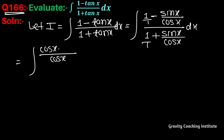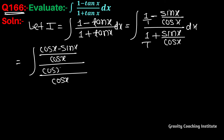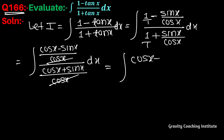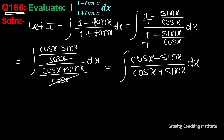Taking LCM, we get (cos x - sin x) over cos x in the numerator, and (cos x + sin x) over cos x in the denominator. The cos x cancels out, so the expression simplifies to (cos x - sin x) upon (cos x + sin x).